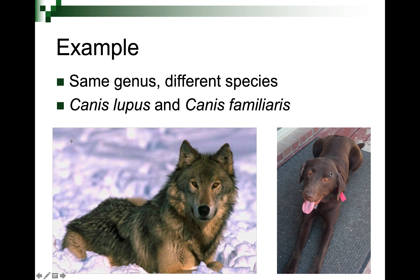Here's an interesting example for students. These are different species: your dog, Canis familiaris, and Canis lupus. They're both in the same genus, Canis, because they're both dogs — but lupus is the wolf and familiaris is your pet at home.